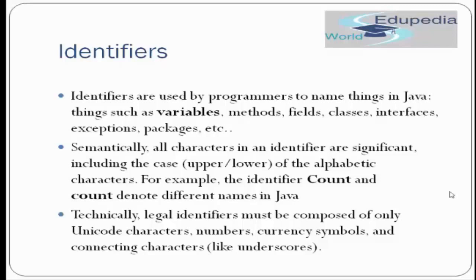Semantically, all characters in an identifier are significant, including case — upper and lower case in identifiers are different. For example, the identifier 'Count' with a capital C and 'count' with a lowercase C denote different names in Java. Technically, a legal identifier must be composed of only Unicode characters, numbers, currency symbols, and connecting characters like underscore — either individually or in any combination.